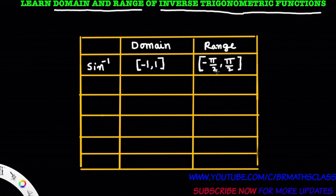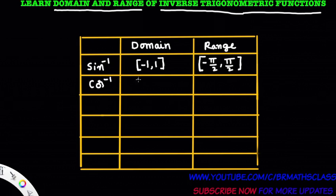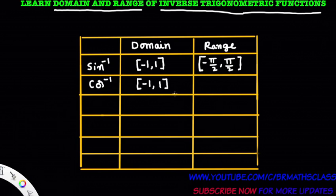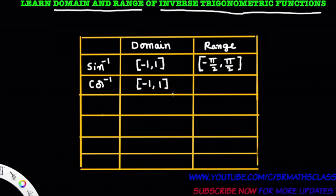Now we will see the domain and range of cosine inverse function. Cosine inverse is a function whose domain is the closed interval minus 1 comma 1. Sine inverse and cosine inverse are functions whose domains are both the closed interval minus 1 comma 1. This is easy to remember because sine is a function whose values lie in the closed interval minus 1 comma 1.